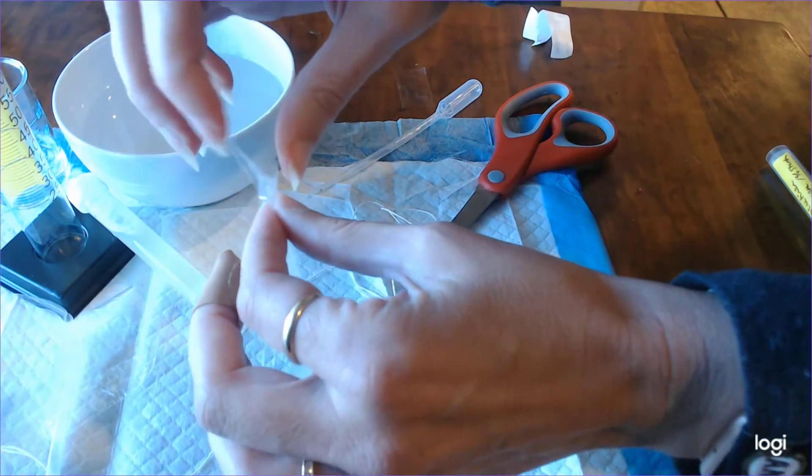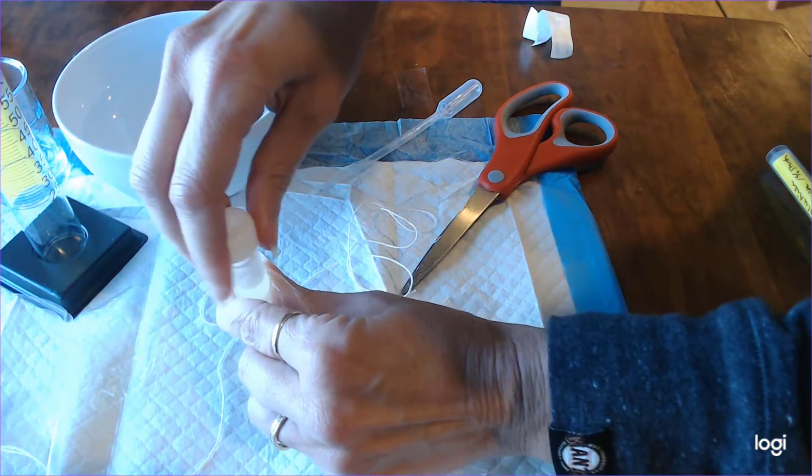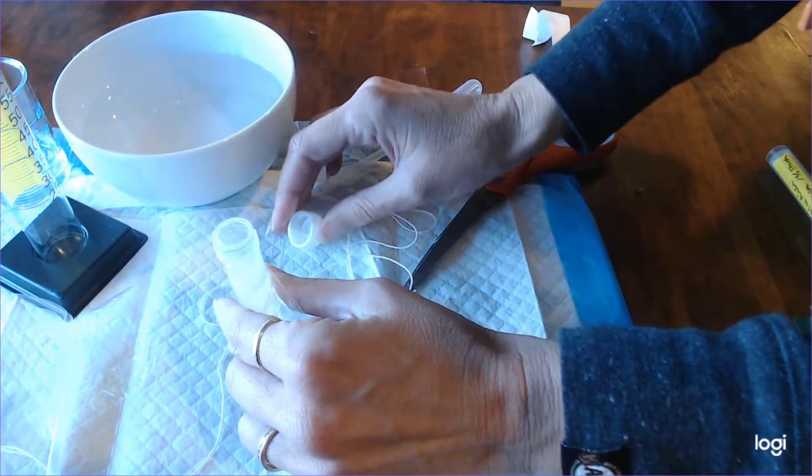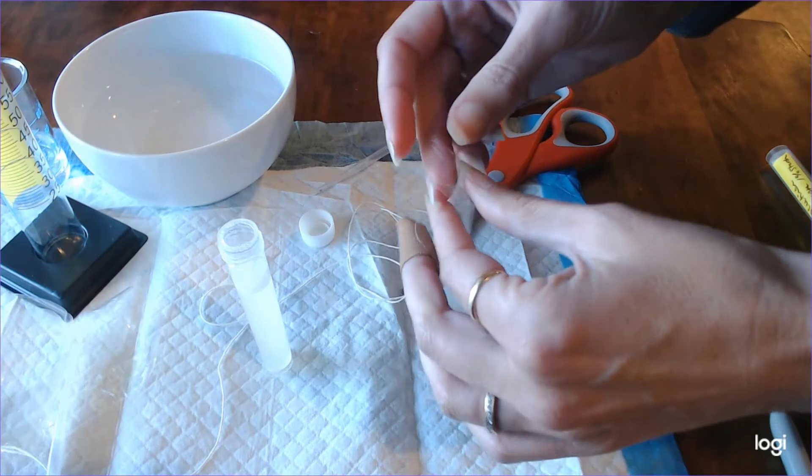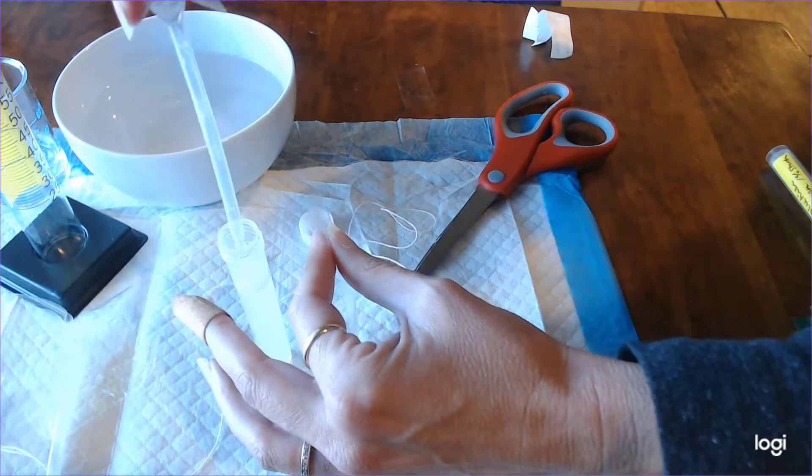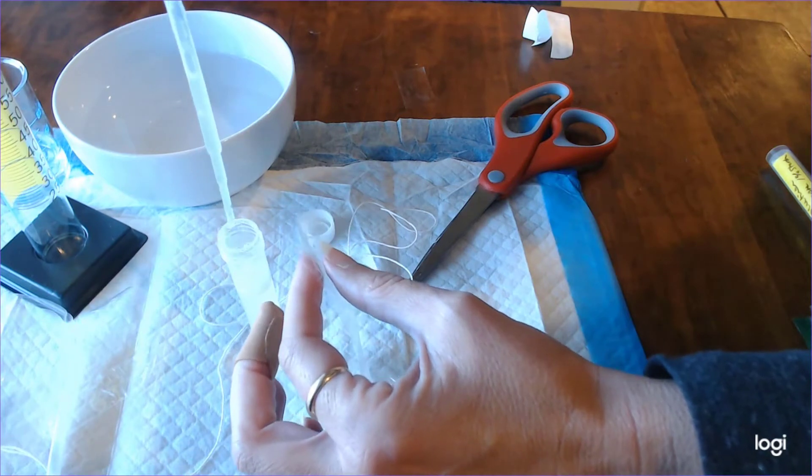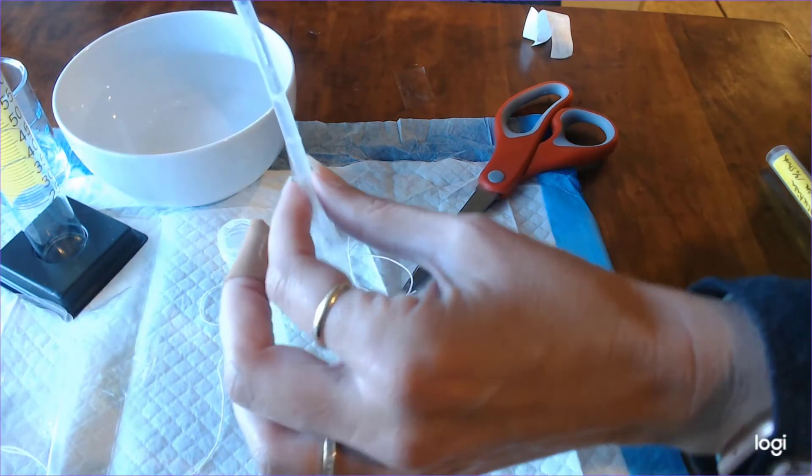Now we're going to go ahead and add our dialysis solution that has been dissolved into the dialysis tubing. Now that tube is a little precarious so what I recommend doing so that you don't knock it over like I almost did a couple different times is actually put it in the 50 milliliter beaker so that it gives it some stability or a small cup so that you don't do that.